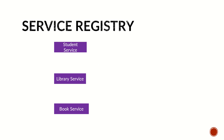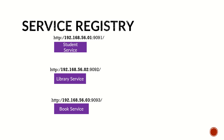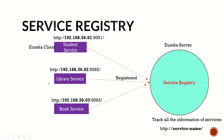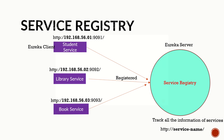Coming to service registry — how we register services to the Eureka server. We have student service, library service, and book service, running on ports 9091, 9092, and 9093 respectively. They are all registered to one registry service which is the Eureka server, running on port 8761 — the default port for the Eureka server. We can track the information of each registered service on the Eureka server page, and with the help of each service's name we can directly call one service from another.